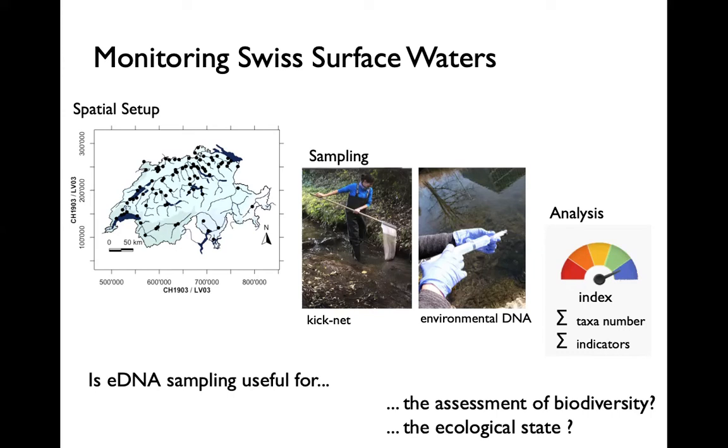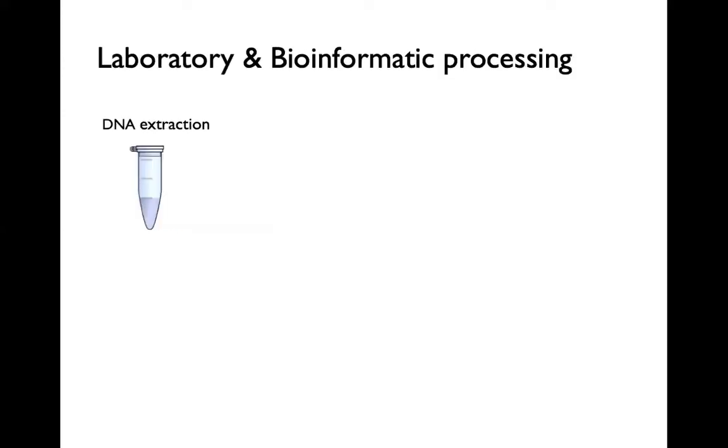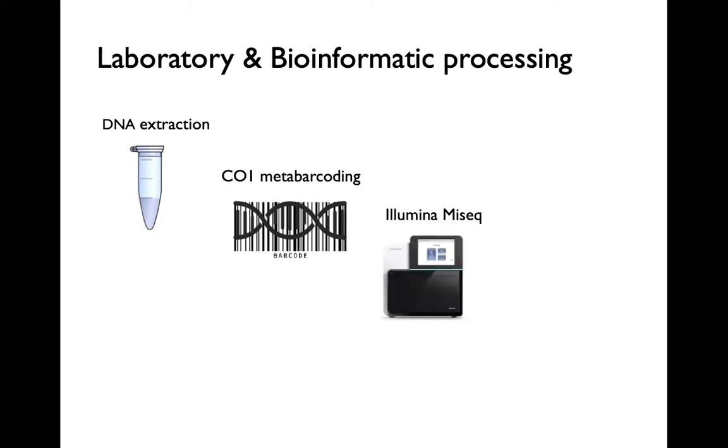I'm going to quickly introduce you to the workflow of eDNA sample processing. First, DNA was extracted from all filters in a cleanroom environment. In a two-step PCR protocol, we targeted a broad range of metazoans with the primers developed by Lira and Geller. The multiplexed library was sequenced on an Illumina MiSeq platform, resulting in 26.4 million reads. The raw data was quality-filtered, bioinformatically processed, and the resulting OTUs were mapped against a customized taxonomic database.